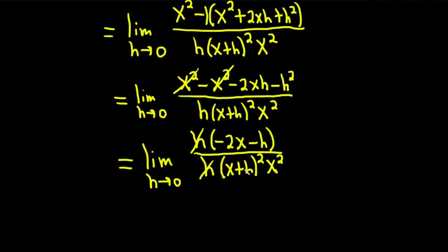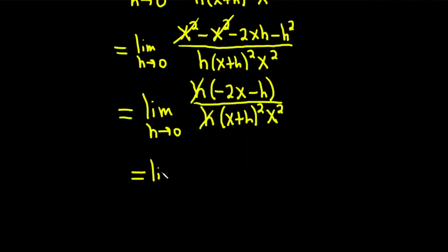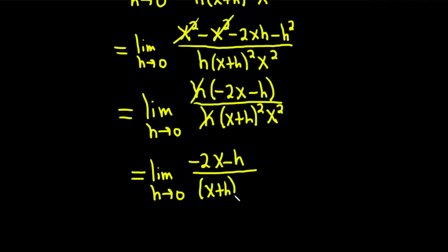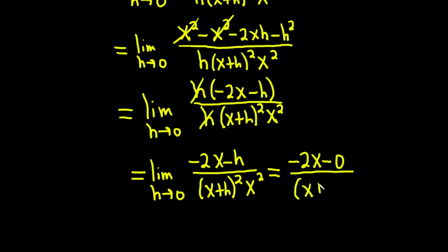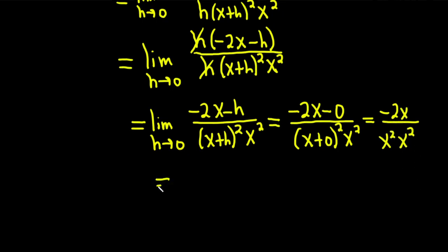After canceling, this equals the limit as h approaches 0 of (−2x − h) over (x+h)² · x². At this point, we can finally plug in h = 0. We drop the limit sign and get (−2x − 0) over (x + 0)² · x², which is −2x over x² · x², which is −2x over x⁴, and that simplifies to −2 over x cubed. That's the correct answer.